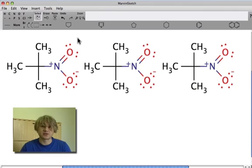In the case of this nitromethane, we can see that there is a negative charge on this oxygen here, and that is the source of our electron flow.